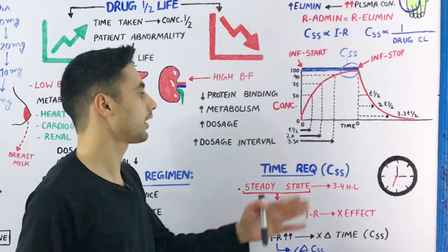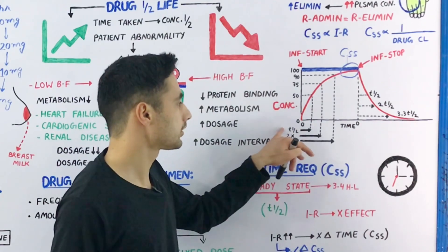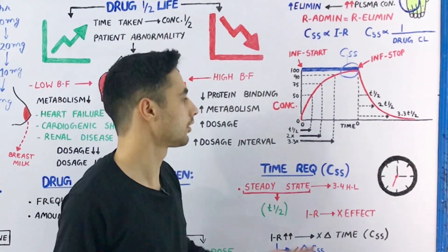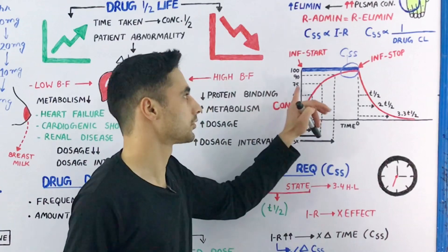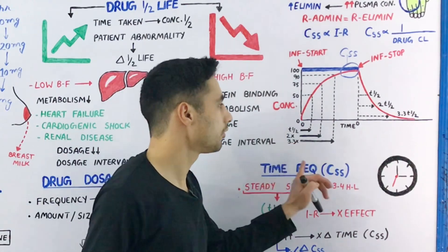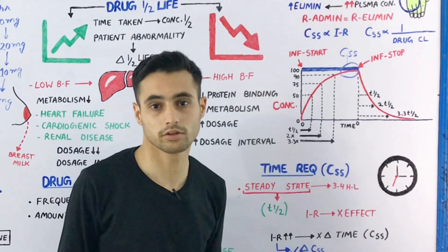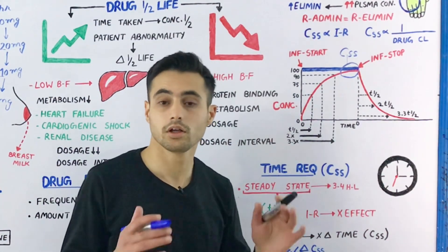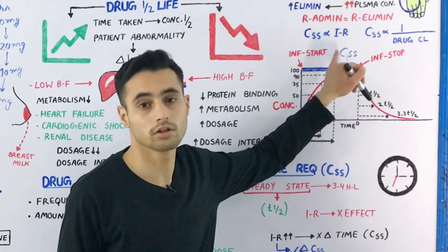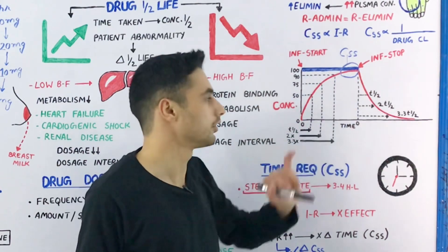Now, what is the effect of half-life on this infusion and clearance? After the first half-life, you have 50% of the maximum concentration at steady state. After the second half-life, you have 75%. After the third or fourth half-life, you have approximately 90% of the steady state concentration. So most drugs require three to four half-lives to achieve the steady state concentration.